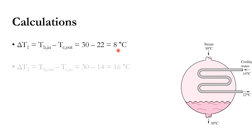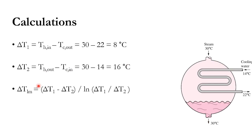Delta T2 = T_H,out − T_C,in = 30 − 14 = 16°C. The formula for log mean temperature difference is LMTD = (ΔT1 − ΔT2) / ln(ΔT1 / ΔT2), which we studied in the previous lecture.